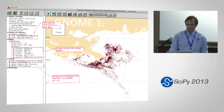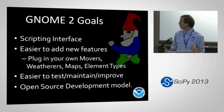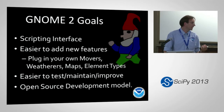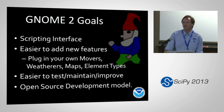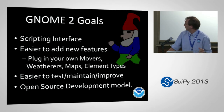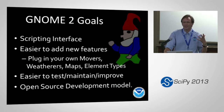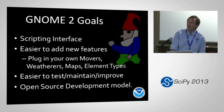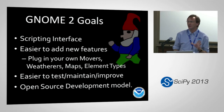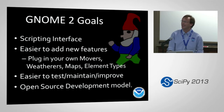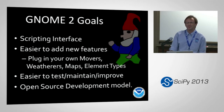This is what GNOME 1 looks like. The goals for GNOME 2 are to provide a fully flexible, powerful scripting interface — Python is the obvious choice for that — and we want it to be a lot easier to add new features: plug in new movers, new types of maps, different types of elements. GNOME has also been used for larval transport and HAB transport. We want it to be easier to test and maintain, and we're moving towards an open source development model. I actually just pushed the code up to GitHub right before this meeting, though it stalled out at 34%.